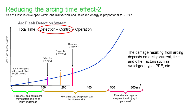When dealing with an arc flash detection system, the total time includes detection time, control time, and breaker operation time. What we can control in our system is the detection and control portion. Our target: if we can detect the arc within 2 milliseconds and add breaker operation time of 3 to 5 cycles, we are targeting around 80 milliseconds maximum. That's a good target to apply the arc light system.